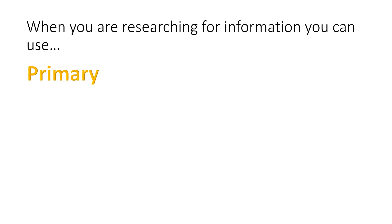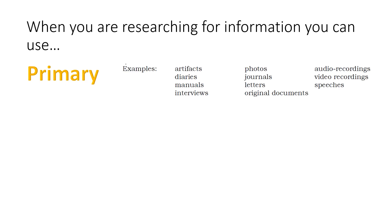In researching information, we can use primary sources. Examples are artifacts, diaries, manuals, interviews, photos, journals, letters, original documents, audio recordings, video recordings, and speeches. These are first-hand raw data or documents made by a person who witnessed the event.